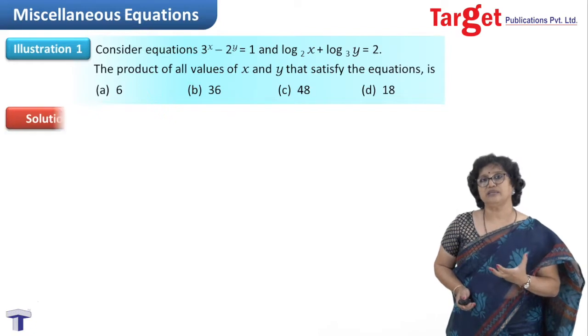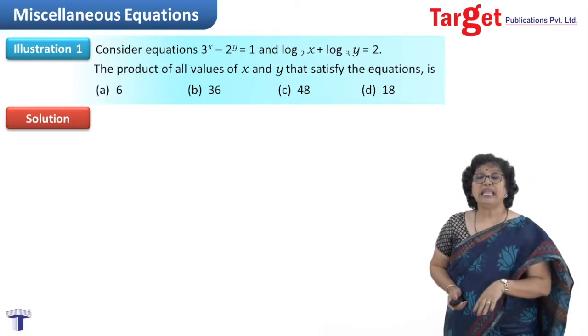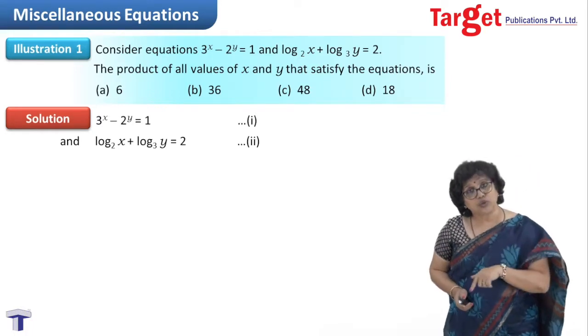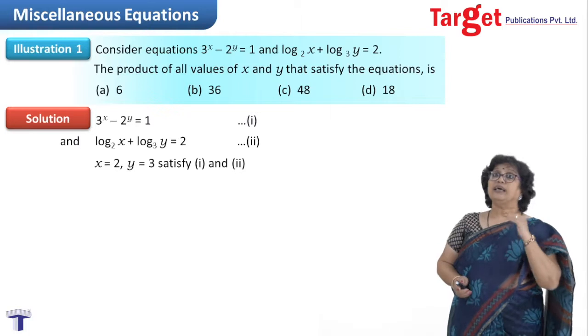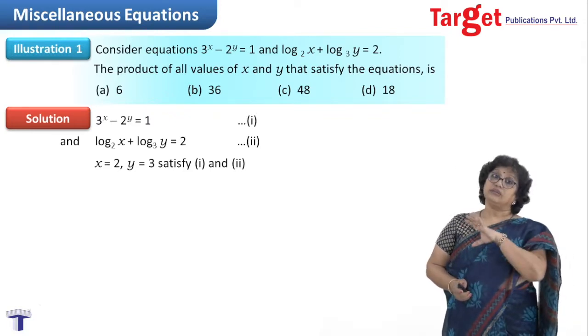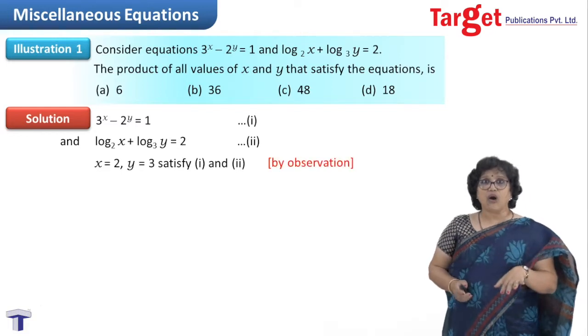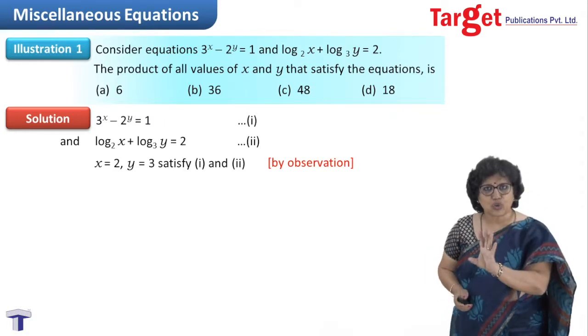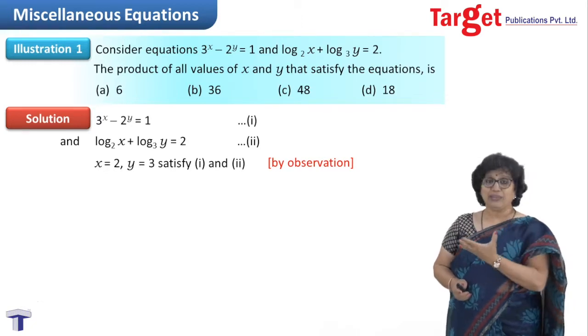There are certain questions which can be solved by observation. If you have clarity, everything is perfect. My first observation is that the first and second equations get satisfied by x=2 and y=3, because 3^2 would be 9 and 2^3 would be 8, and 9-8 is 1. So x=2, y=3 satisfy. But some may think, how do you say this is the only solution? I'm not yet saying this is the only solution, but one of the solutions I know is x=2, y=3.